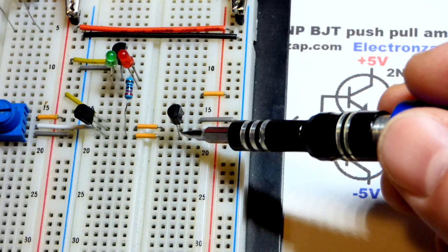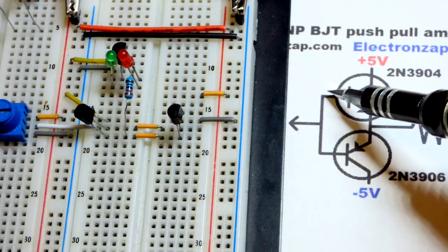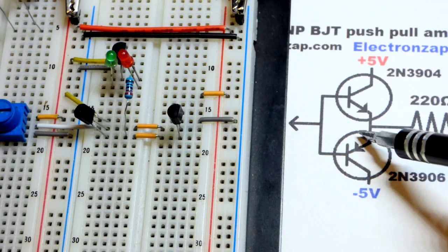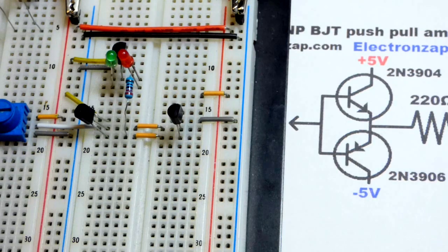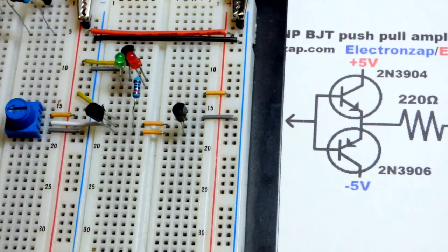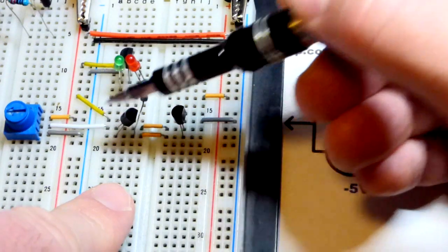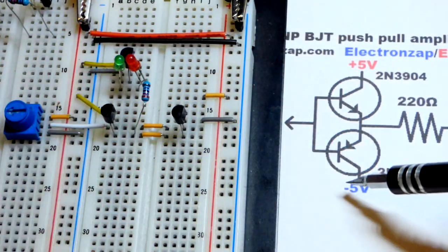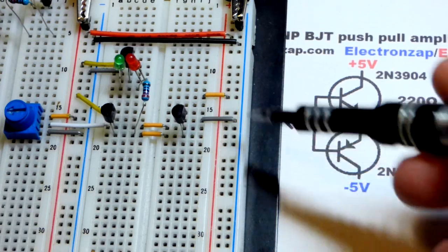Now we have the emitter down here. They're both connected directly together too. So both bases are connected together, both emitters are connected together. Now since they are opposite chemistry transistors, the NPN one is going to the positive rail at the collector, whereas the PNP is going to the negative rail. So again we're going to take 10 volts and split it.